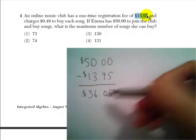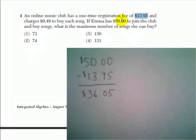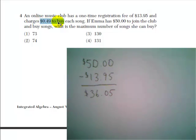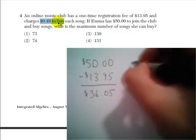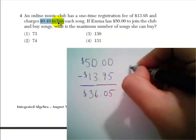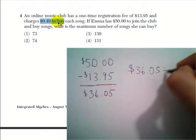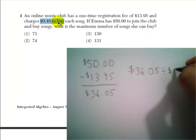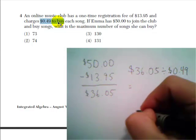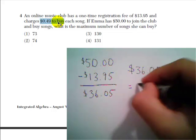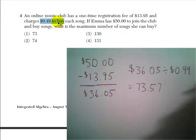So after paying the registration fee, Emma has $36.05 to buy songs. Each song costs $0.49 to buy. So how many $0.49 songs can she buy with $36.05? That's just straightforward division. Let's take $36.05 and divide by $0.49. We're going to do a little work on our calculators here. This gives us roughly 73.57.